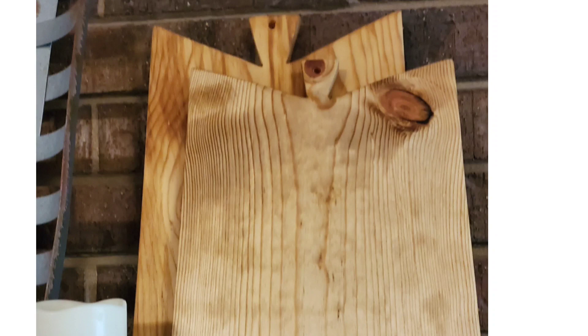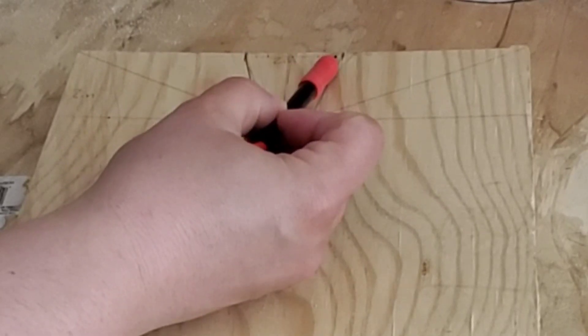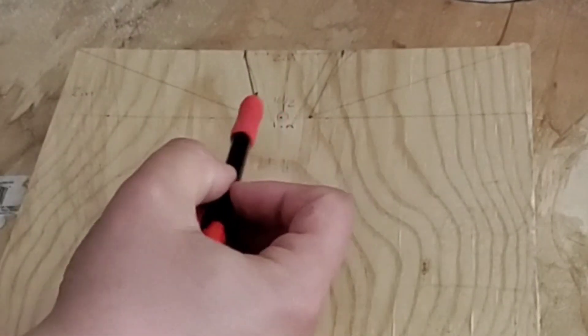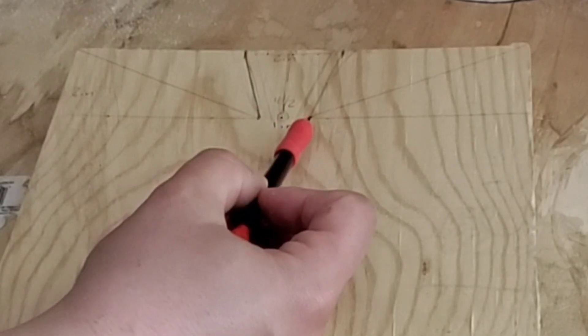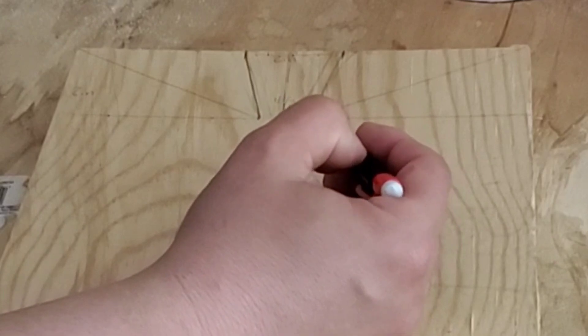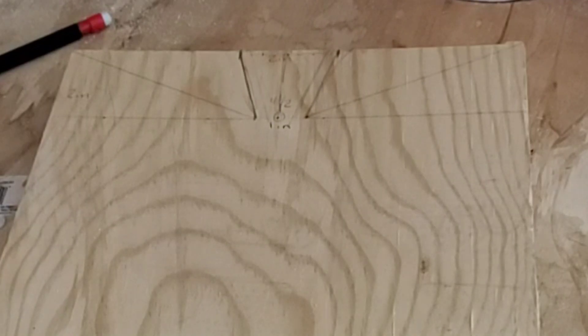The first DIY I want to show you are these cutting boards. We're doing an edge grain cutting board. I measured two inches down, my handle top is two inches over, the bottom of my handle is one inch over, and I centered that on four and a half inches. I took my ruler and made diagonal lines to connect the dots, and that's where I'm going to be cutting.